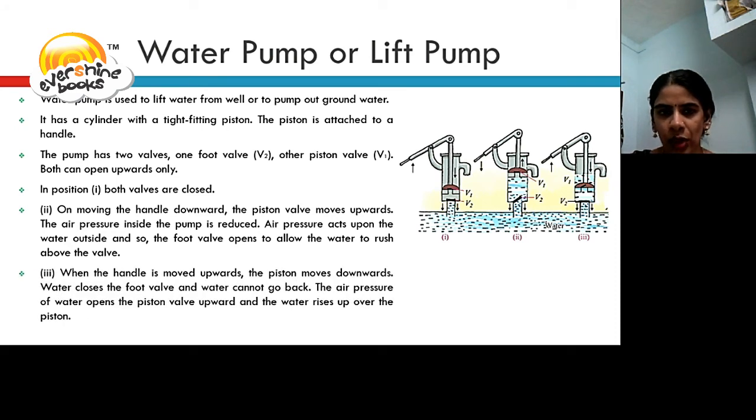In position 3, the handle is moved upwards. The piston moves downwards. Water closes the foot valve and water cannot go back. The air pressure of water opens the piston valve upward and the water rises up over the piston.